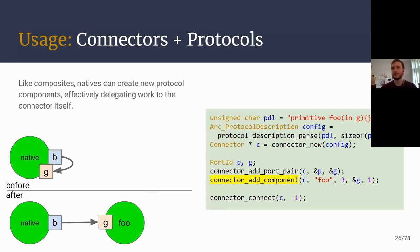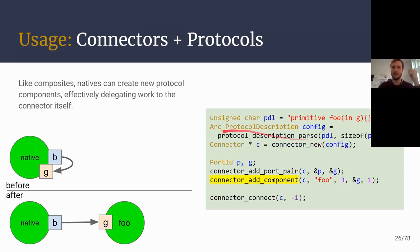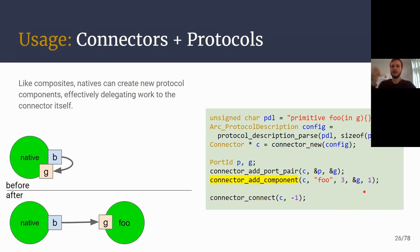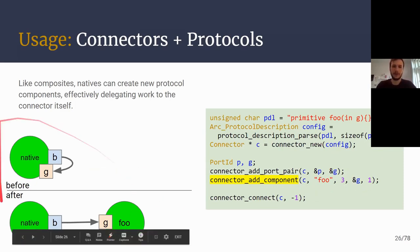Connectors and protocols come together because native components can instantiate protocol components too. You first have to initialize this protocol description structure — the parsed version of all the components you intend to instantiate. During the setup phase, you're able to instantiate these components much the same way composites can, by choosing an identifier for the component and then passing in your ports. Here we see we pass in one port G corresponding to the picture on the left.